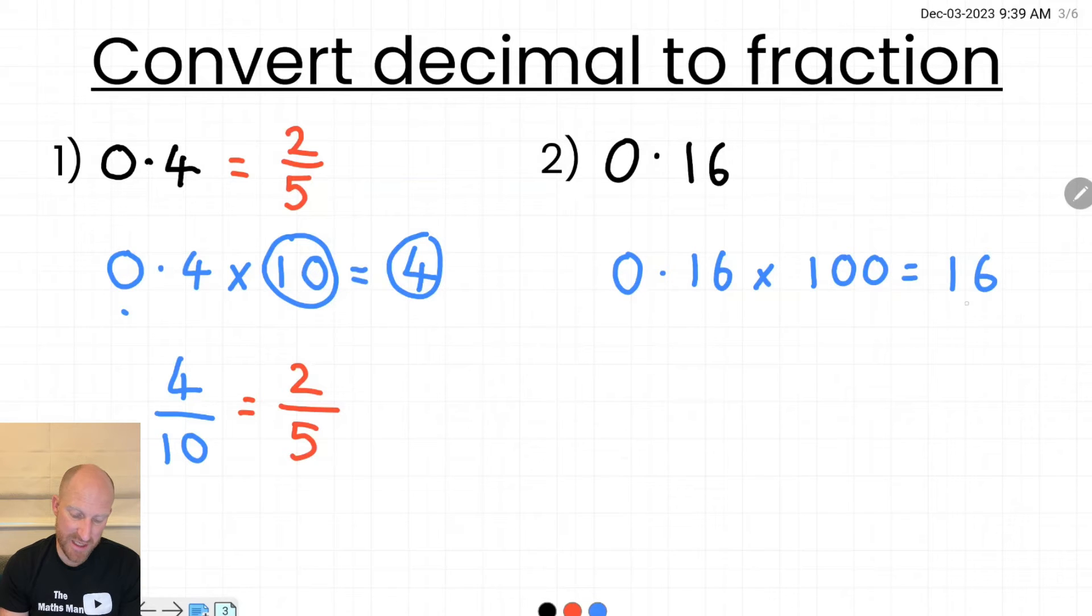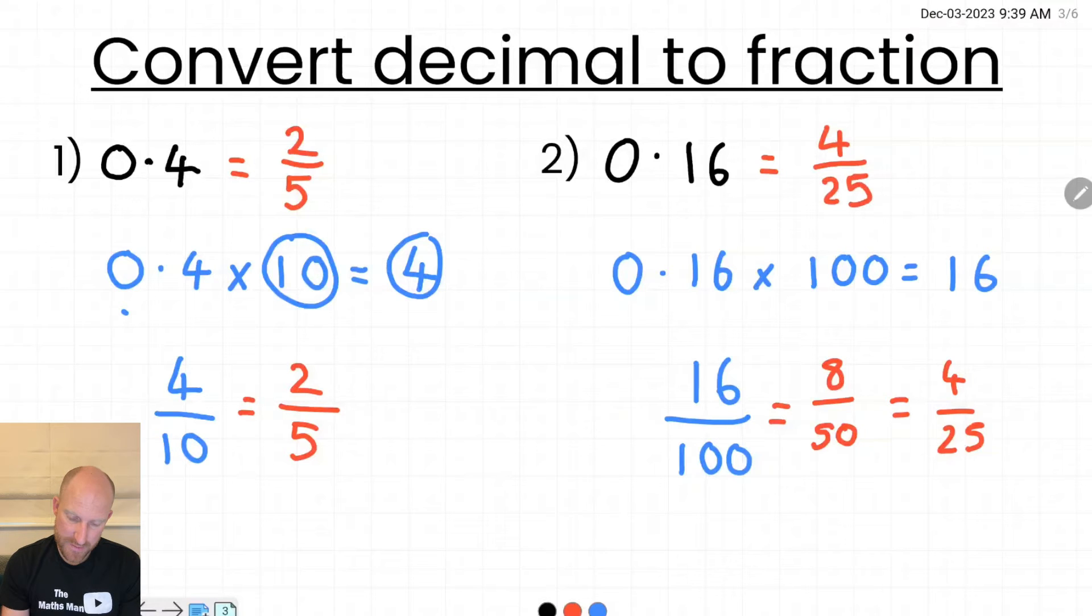So now that 16 is going to form my numerator and I multiplied it by 100, so that's going to be my denominator. So for the smart mathematicians out there you might have noticed that 16 one hundredths can be simplified. So I'm going to use the halving technique here to simplify it quickly. So 8 fiftieths, 4 twenty-fifths and I think that is the lowest form for this fraction. So 0.16 is the same as 4 twenty-fifths.